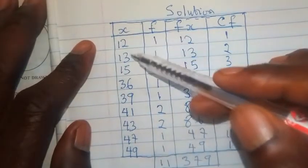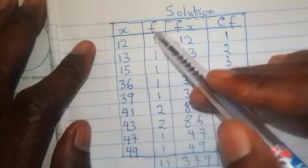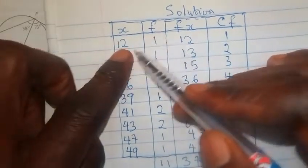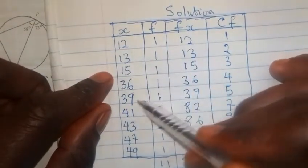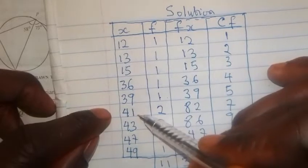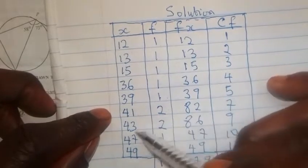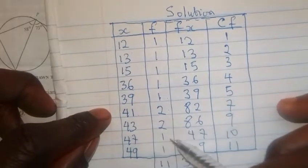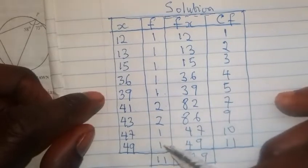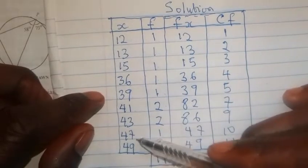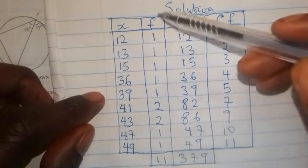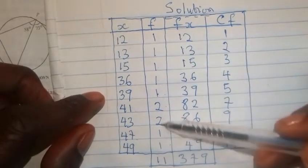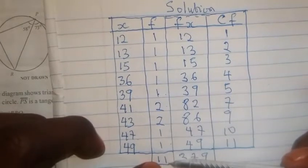the number of times each of these ages appears is what I call the frequency here. So, 12 appears once, 13 once, 15 once, 36 once, 39 once, 41 twice, 43 twice, 47 twice, 47 once, and 49 once. So, if we add up all the frequencies, we are going to have 11.